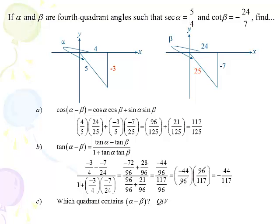To find the quadrant containing alpha minus beta: we have a positive cosine, which puts us in quadrants 1 or 4, and a negative tangent, which puts us in quadrants 2 or 4, so alpha minus beta is in quadrant 4. We can also work backwards for sine of alpha minus beta: since tangent is negative 44 over 117 and cosine is 117 over 125, and we're in quadrant 4, the sine would be negative 44 over 125.